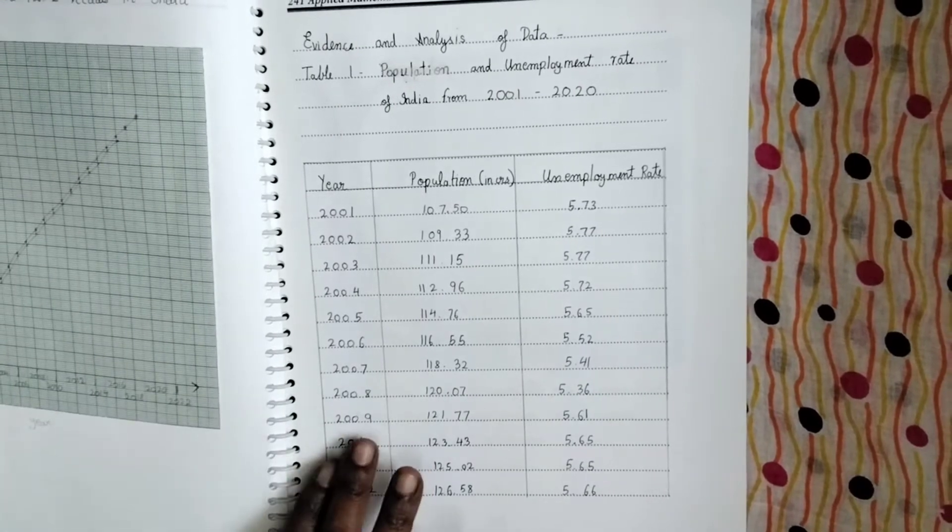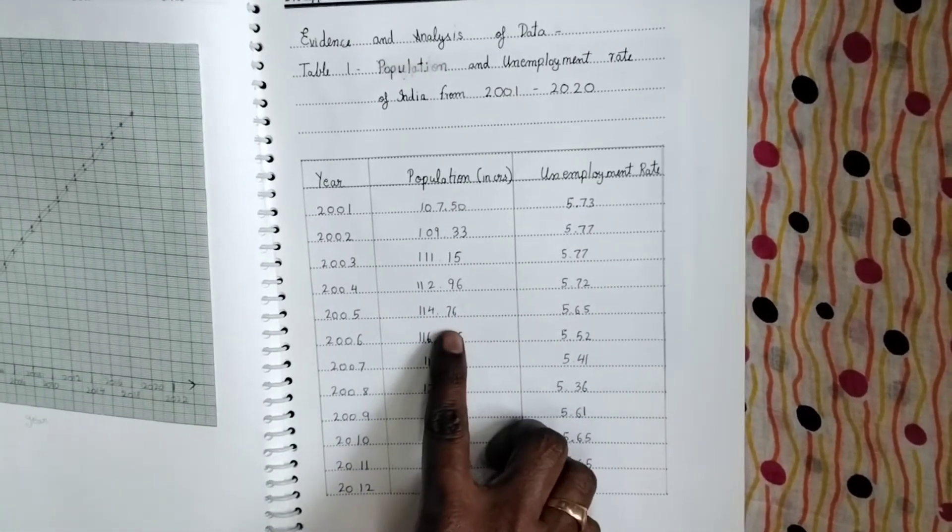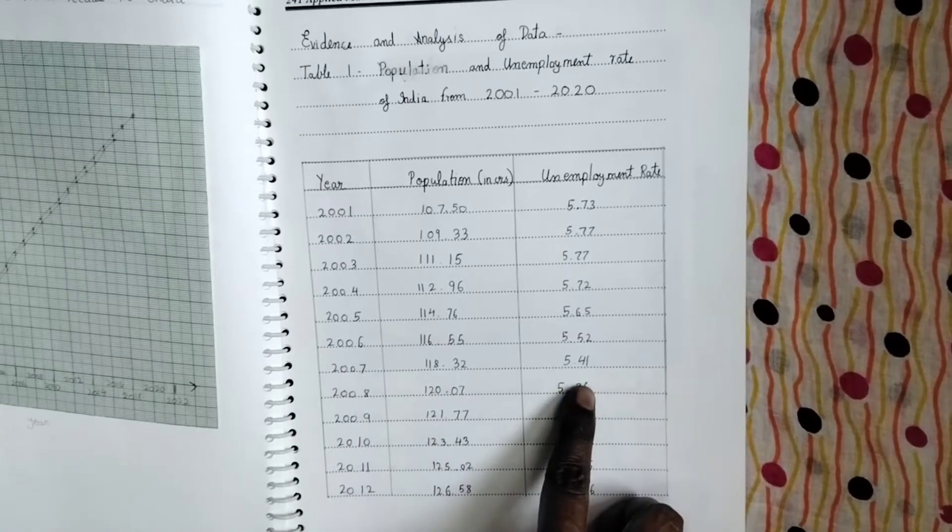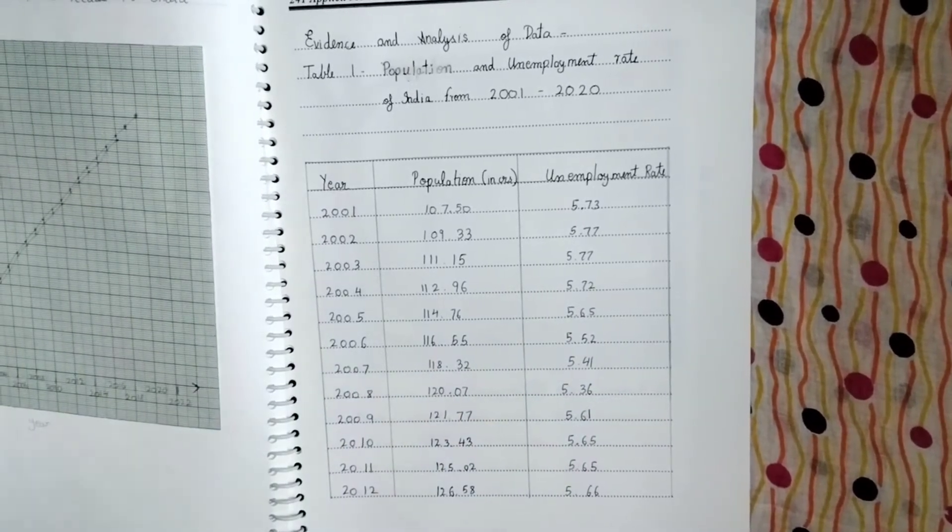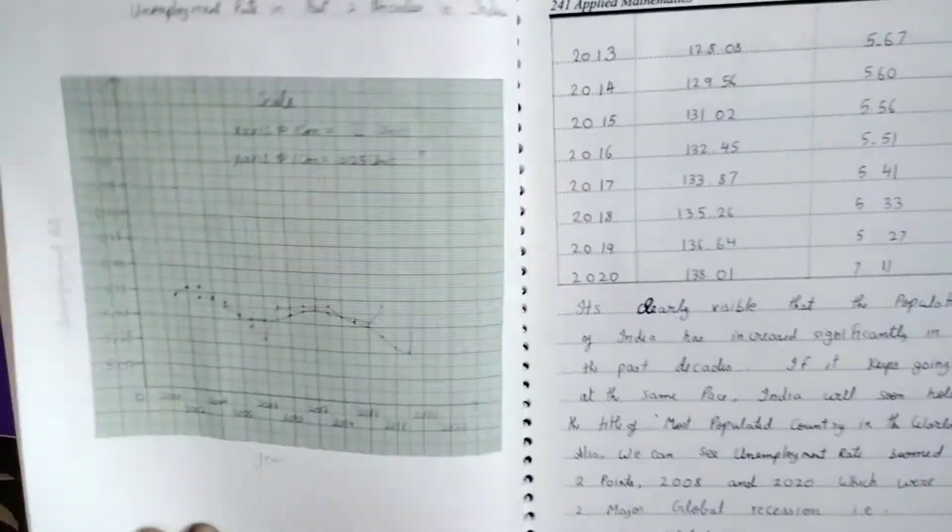See here, this is the first statistical tool that he's used. Population in crores, unemployment rate. This is for India he's done and he's given the line, the trend line.